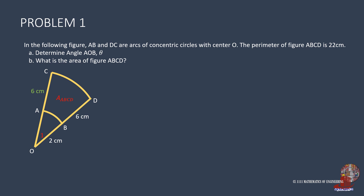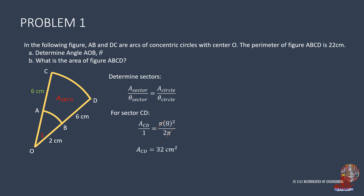Next, find the area bounded by points ABCD using sectors via ratio and proportion between the areas and central angles. Starting with the bigger sector CD: area of sector CD is to 1 radian as pi times 8 squared over 2 pi. Cancelling pi gives area of sector CD as 32 square cm. For sector AB, area of AB is to 1 as pi times 2 squared is to 2 pi, giving area of sector AB as 2. Thus, the bounded area is the difference: 32 less 2, giving 30 square cm.